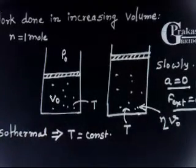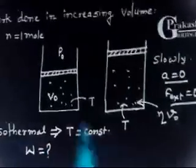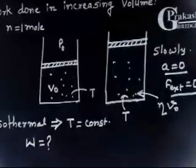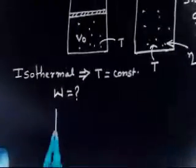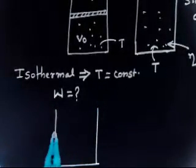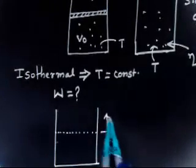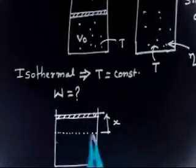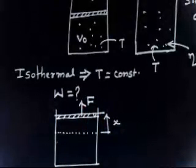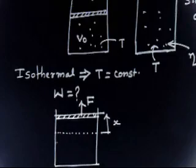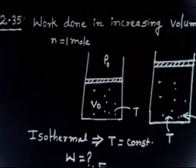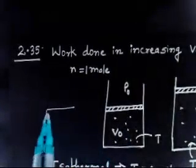We need to find how much work one has to perform to go from state 1 to state 2 by slowly raising this piston. Let us consider the situation where initially the piston was here and now we have moved it by a distance x. What is the initial pressure inside this vessel? Since atmospheric pressure is P0 and the piston is massless, the initial pressure inside is simply P0.